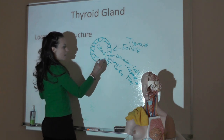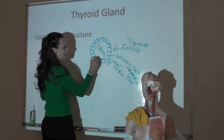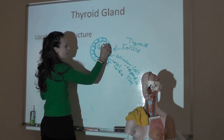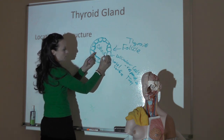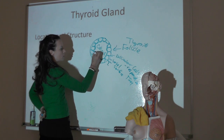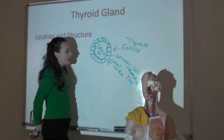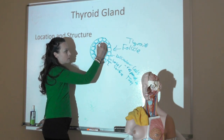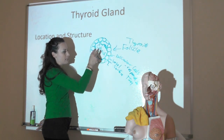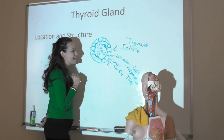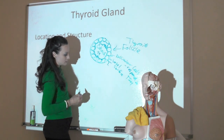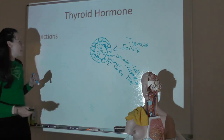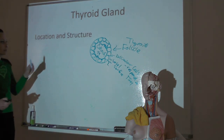In the colloid we have a protein called thyroglobulin, which contains the components needed to make thyroid hormone. Thyroid hormone synthesis also requires iodine. This is what the thyroid follicle is made of and composed of.